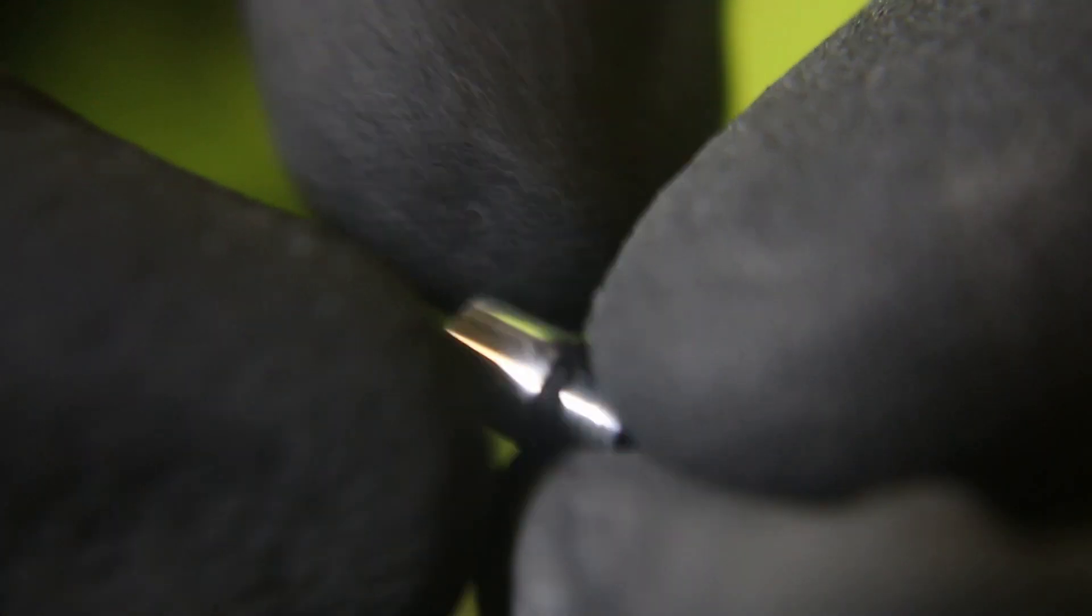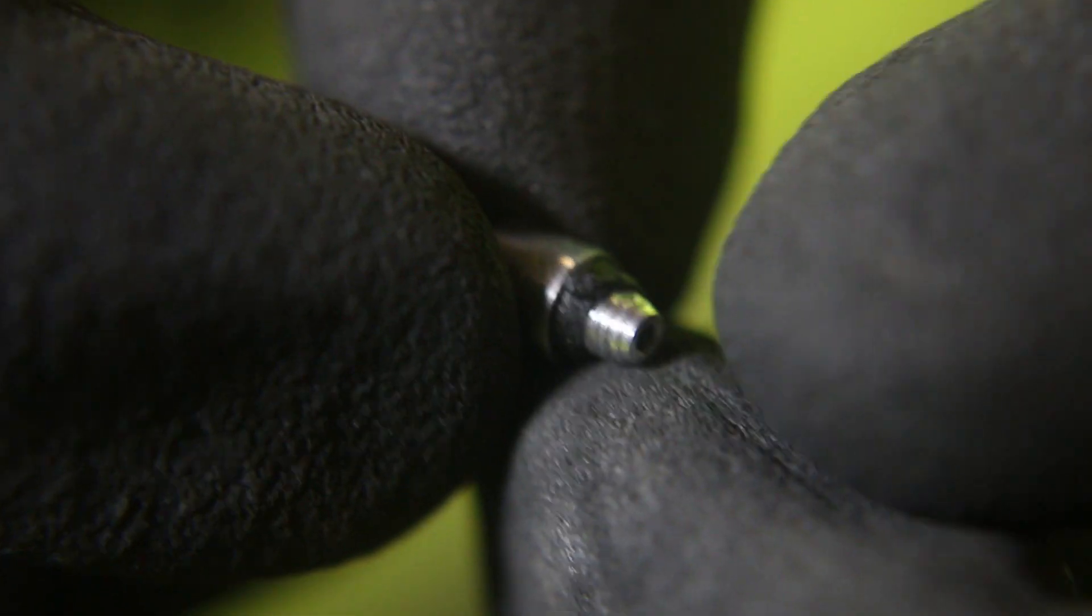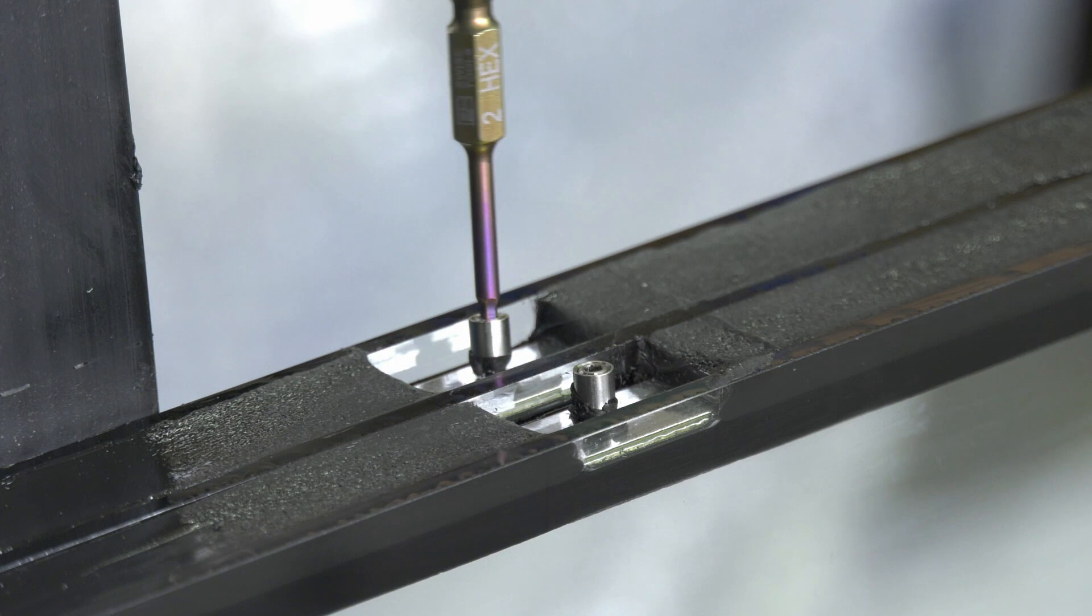A sealing cord made of butyl is applied on the bottom of the Swiss Spacer Air. It is then carefully screwed into the spacer.